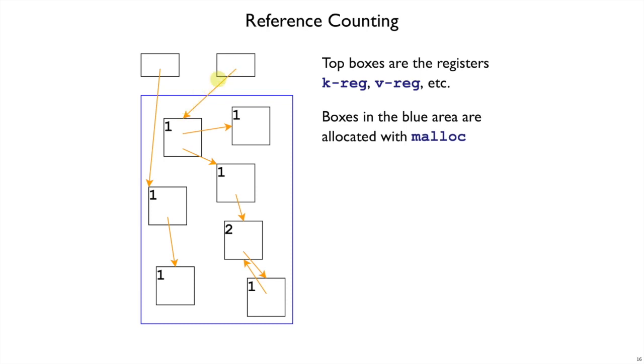The orange lines are references from registers and objects to other objects. So this orange line means that this register has the address of this object. And then the number here is, of course, its reference count. So this object has one reference to it from that register there. This object down here has two references. It has one from the object above it in the picture, but also one from the object below it. So the numbers in the boxes correspond to the number of orange arrows going into it.